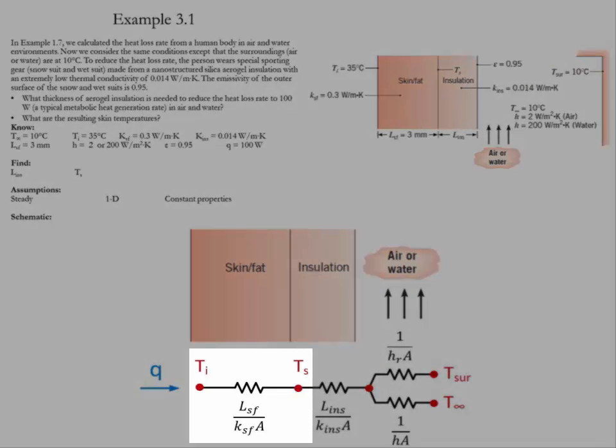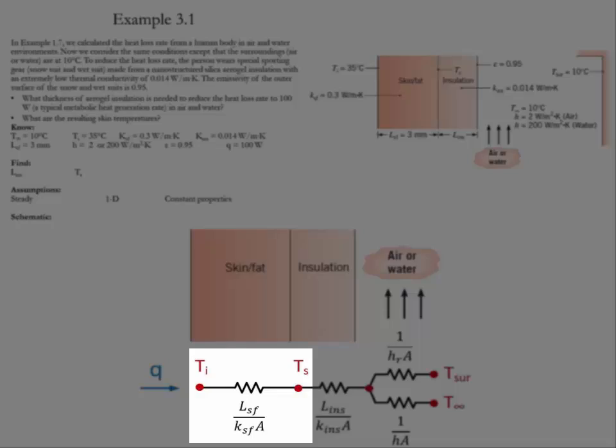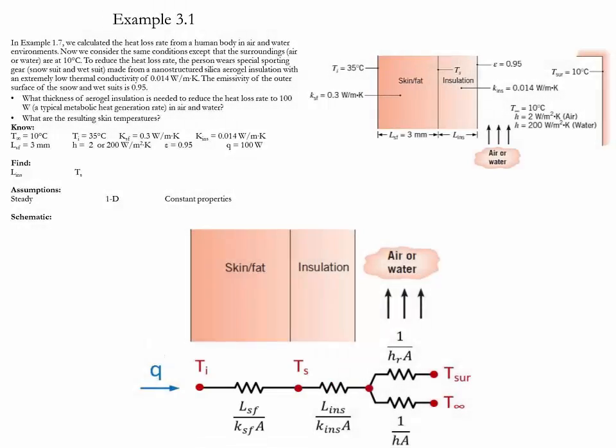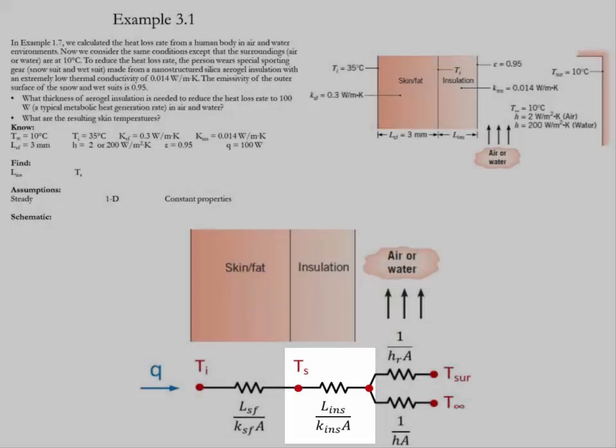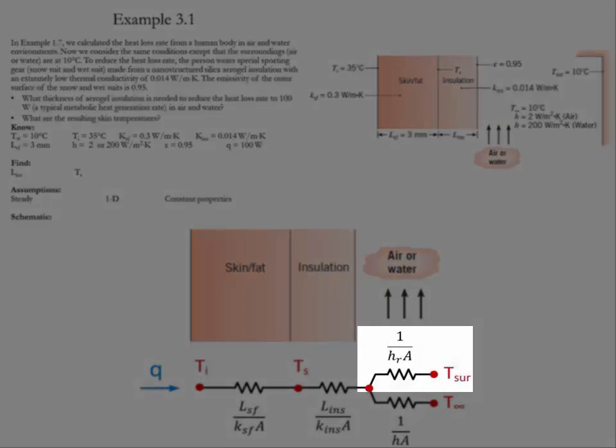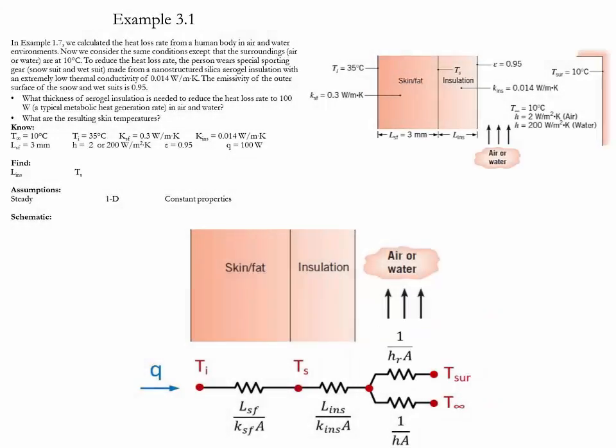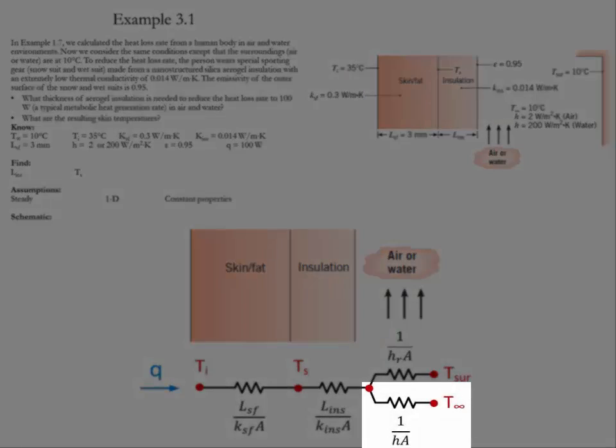The first is the conduction resistance in the skin-fat layer. The second is the conduction resistance in the insulation layer. The third is the radiation resistance, and the fourth is the convection resistance.